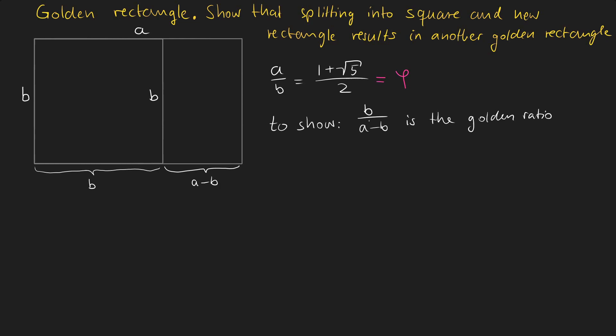But in order to do this we need to get rid of all the variables inside this term. Because as you can see here the golden ratio is just a number. Therefore we will start by replacing either A or B with the information we know. If we multiply both sides of our equation with B we get A equals the golden ratio times B. So A is phi times B.